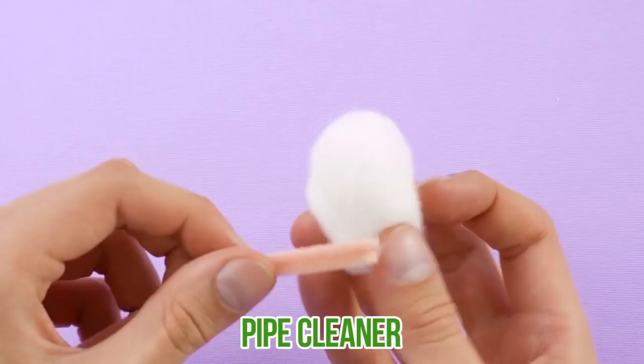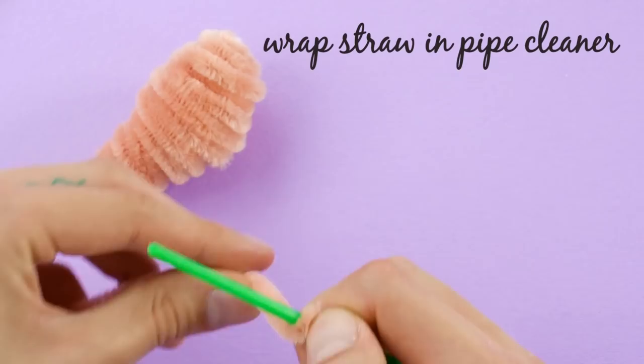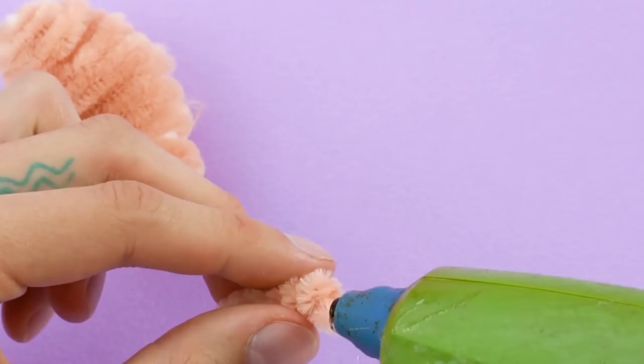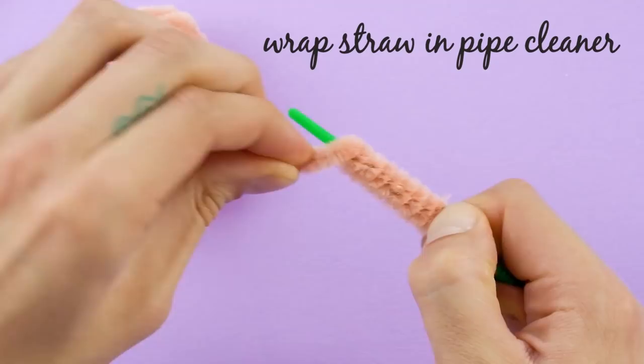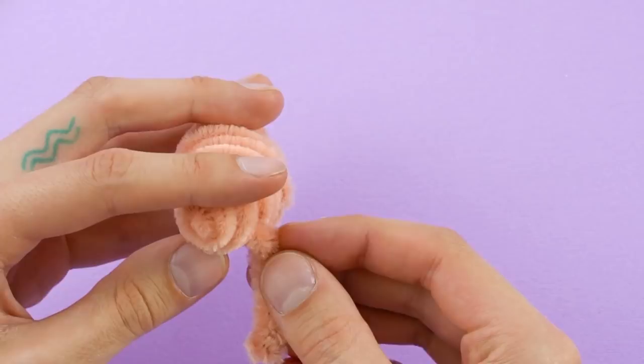Dog. A dog can be Barbie's friend. All you need is a cotton ball and some pipe cleaner. Wrap the pipe cleaner around the cotton ball like this. Then wrap the same color pipe cleaner around a straw. Pull the straw out and glue the end to the body of the dog. Do this for all four legs.